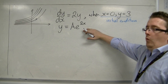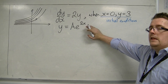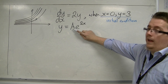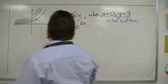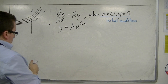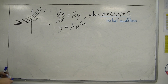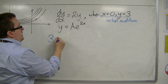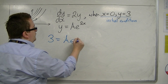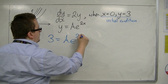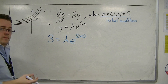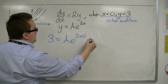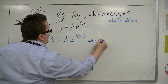Effectively, what you're doing is trying to find the missing value of a. All you do is substitute in the initial conditions. So when y is 3, x is 0. Now, e to the 2 times 0 is just e to the 0, which is 1. So a is 3.